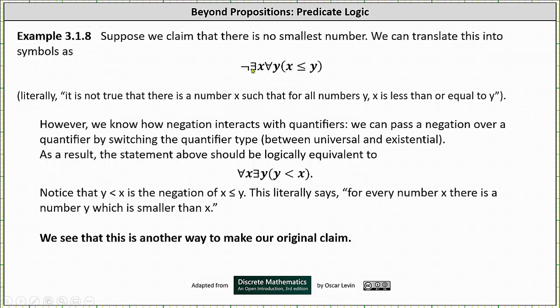Notice there exists changes to for every, and for every changes to there exists. And then we negate x is less than or equal to y. The negation of x is less than or equal to y is x is greater than y, or y is less than x.